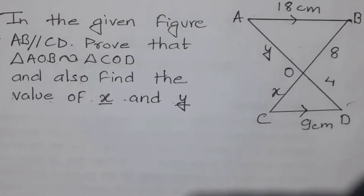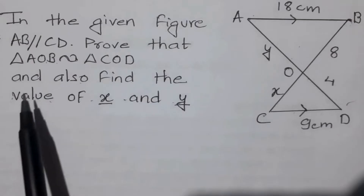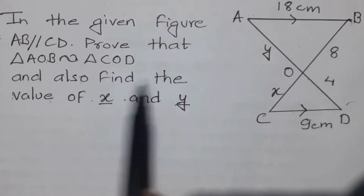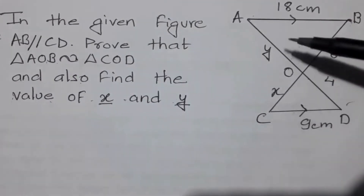In the given figure, if AB is parallel to CD, prove that triangle AOB is similar to triangle COD, and also find the value of X and Y.